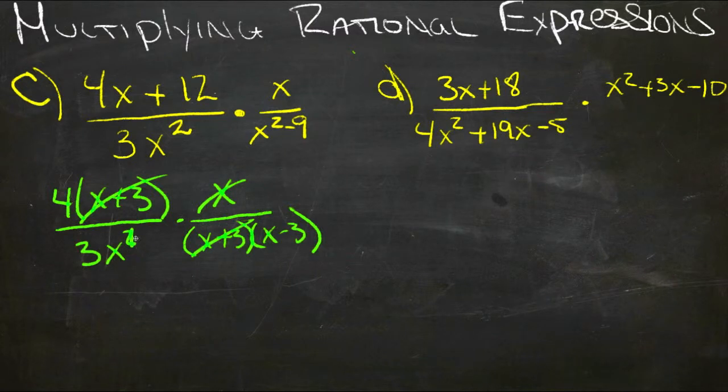And 4 doesn't cancel with 3. So we're left with 4 over 3x times x minus 3.